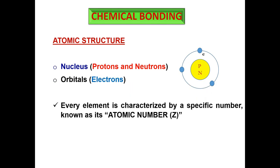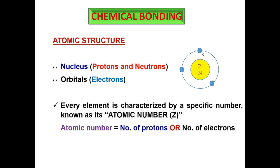Every element is characterized by a specific number known as its atomic number, represented by the letter Z. The atomic number is the number of protons in the nucleus, which also equals the number of electrons revolving around the nucleus in a neutral atom. Since both quantities are equal in a neutral atom, it doesn't matter which you use to define Z.